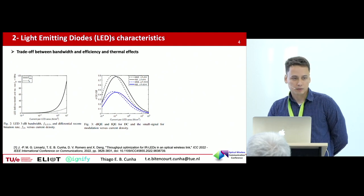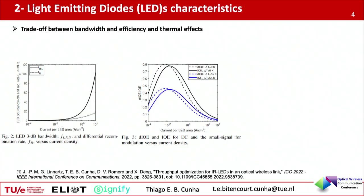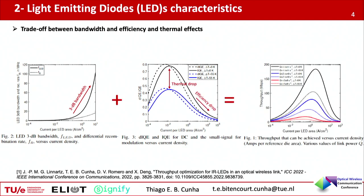If we push the current density to the LED by increasing the current density, we can extend the bandwidth of the LED, and then the low-pass effect can no longer be a problem for high data rates. But also, if we push the current density to the LED, the efficiency at which current modulation translates into photons decreases as well. And when we talk about Li-Fi, coverage area is also important. So if we sum both effects, we are going to see that the throughput increases and decreases by the amount of energy that you push to the LED.